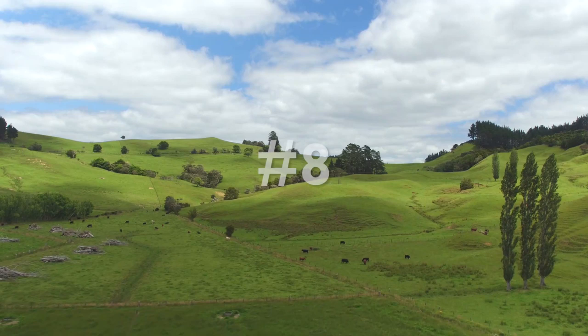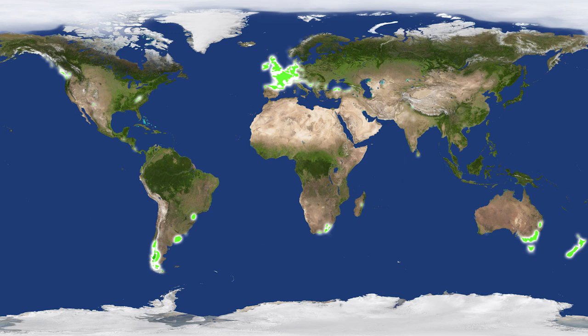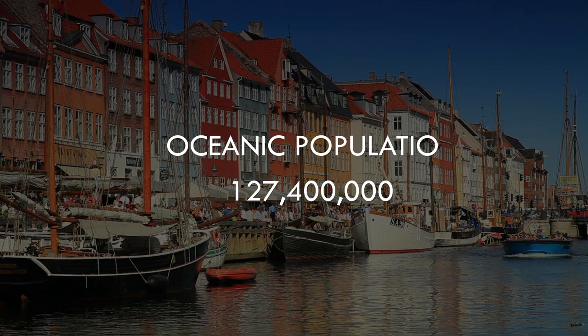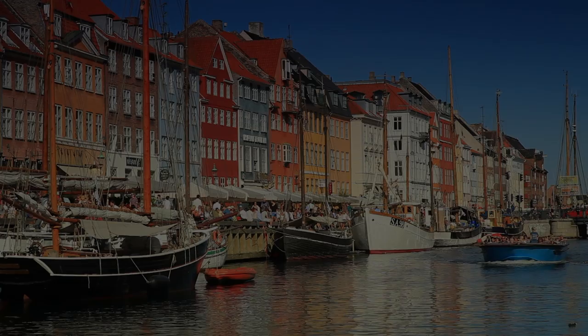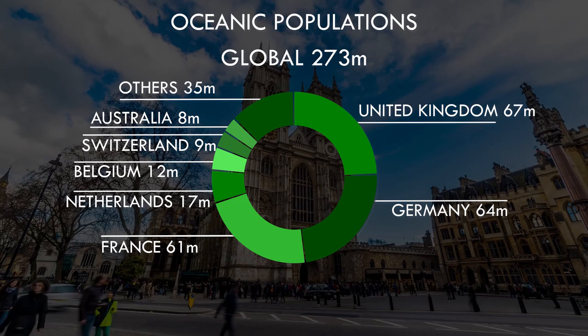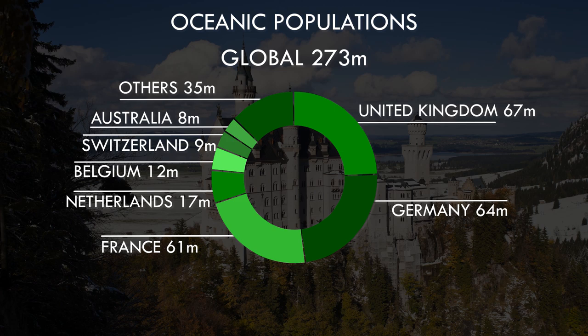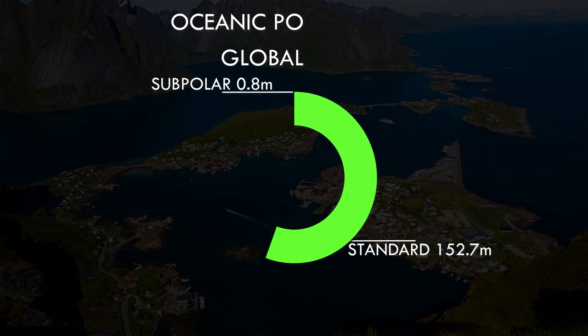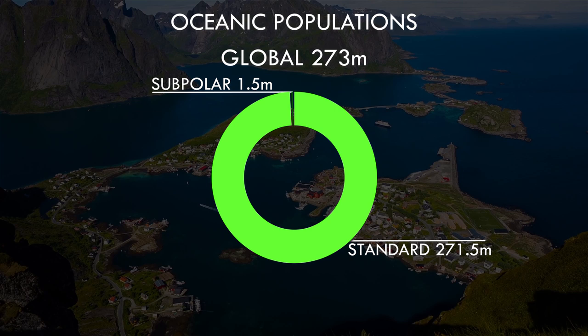At number 8, we head into the mid-latitudes and the western fringes of the continents under the sway of maritime westerly winds — the oceanic. Characterised by rain year-round and relatively mild temperatures between winter and summer, of the 270 million souls living in this zone, the vast majority are within the densely populated and fertile lands of North West Europe, with the three larger countries there accounting for almost three quarters of the global oceanic population. There are two Koppen subtypes — the standard and the subpolar varieties — with only a comparatively tiny number living in the subpolar subzone, which experiences cooler summers akin to a perpetual autumn.